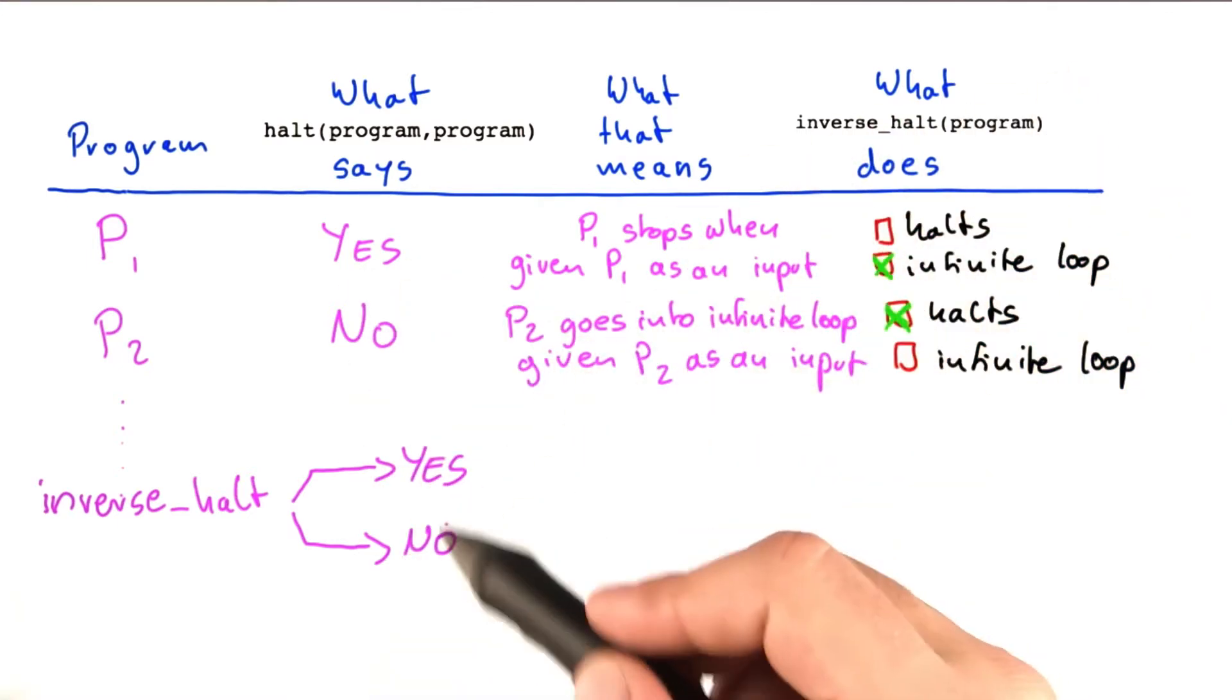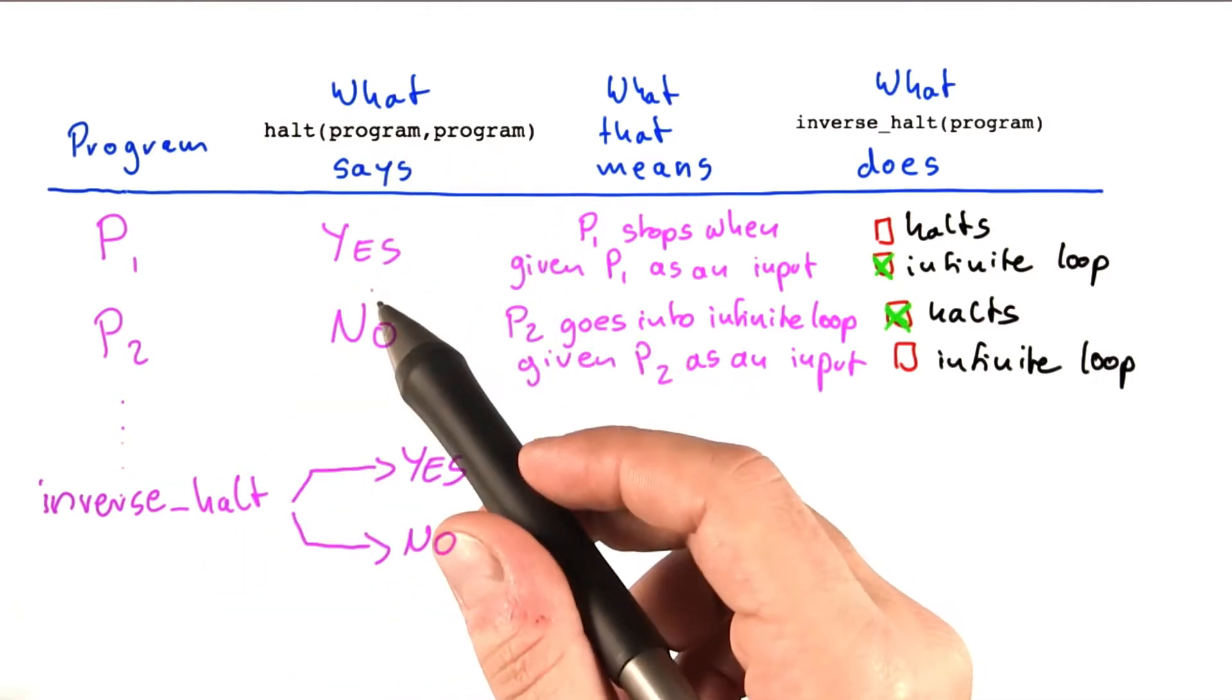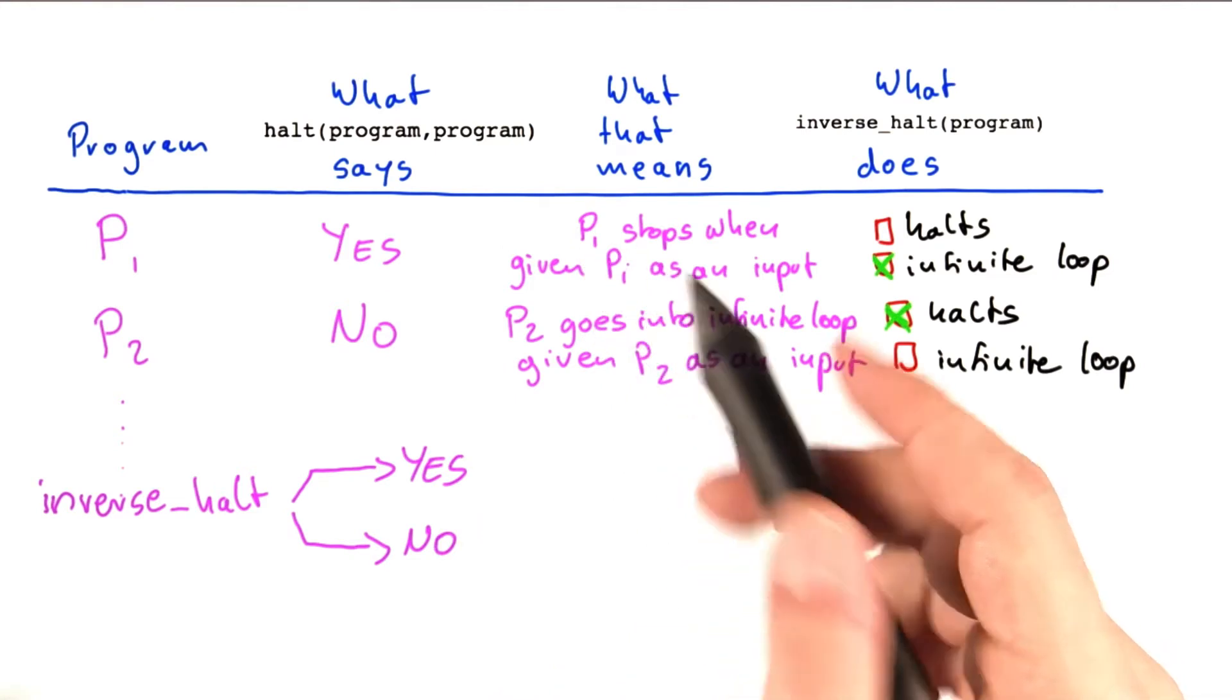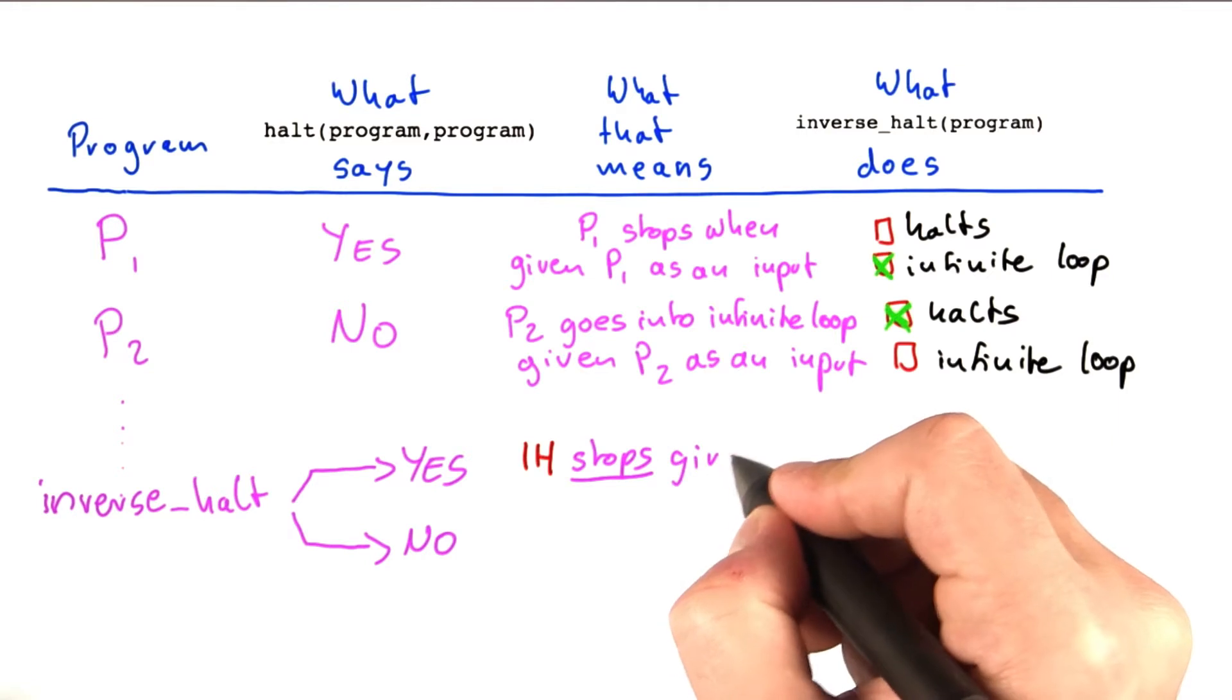Now just as above here, what would that mean? So if halt on inverse halt and inverse halt would say yes, that would mean that inverse halt, and I'm just going to write it like this, so inverse halt stops given inverse halt as an input.